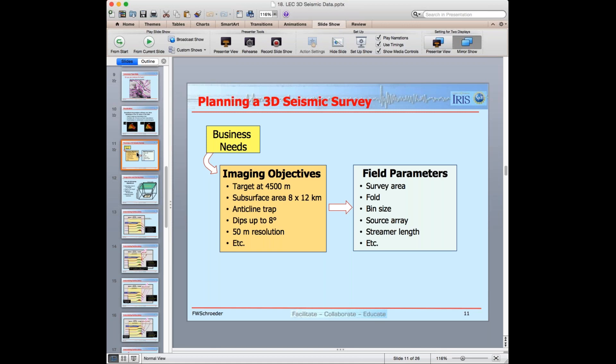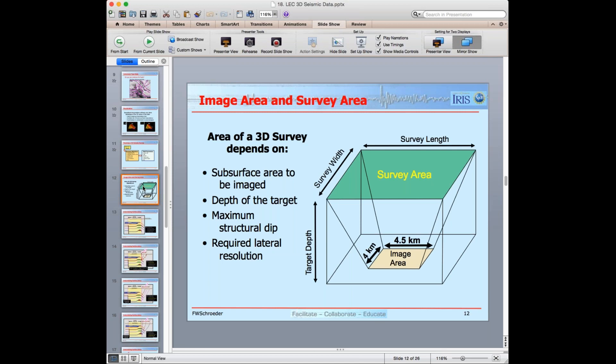And given those objectives, the people that design surveys, they can come up with what the field parameters should be. The survey area, the fold, the bin size, the source array, the streamer length, and other parameters that they have to define in order to acquire the data to meet those objectives. The next slide says image area and survey area.